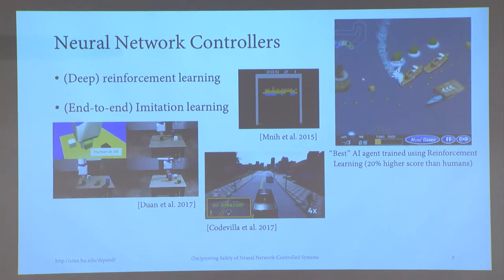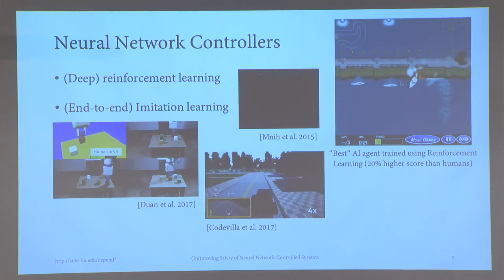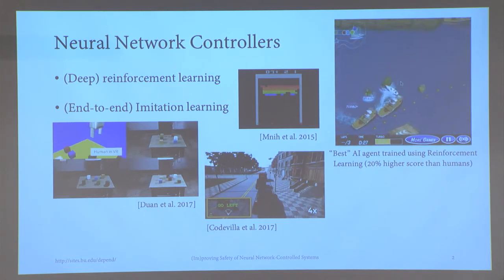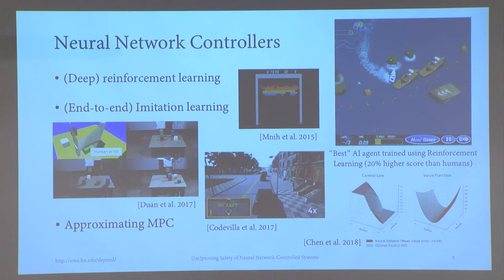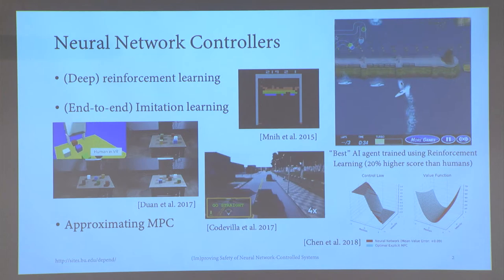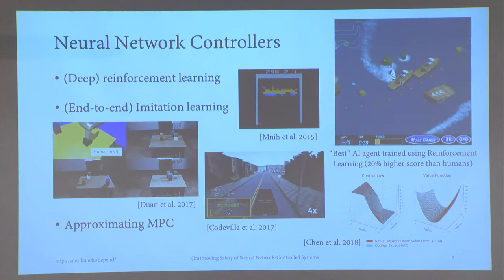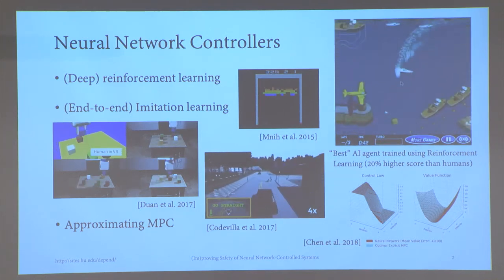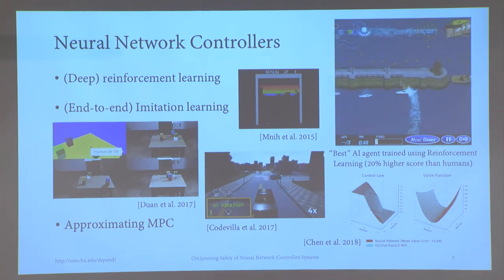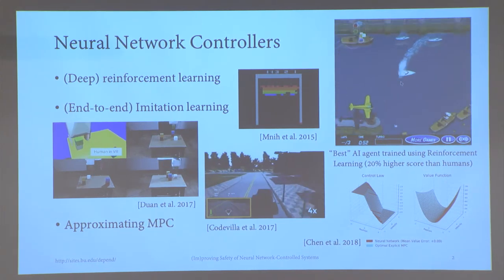A common observation is that many of these successes occur in simulated environments. So the natural question is: why haven't we seen neural network controllers widely deployed in real life? There has been some recent work motivated by practical constraints such as computation resources or timing, since inference is typically quite fast for neural networks — you can use neural networks to approximate an optimal model predictive controller.